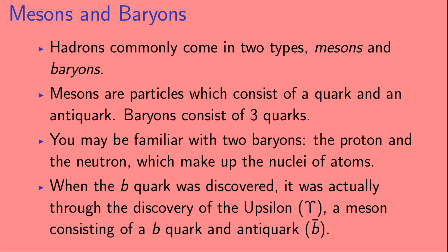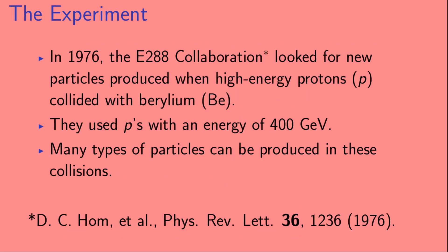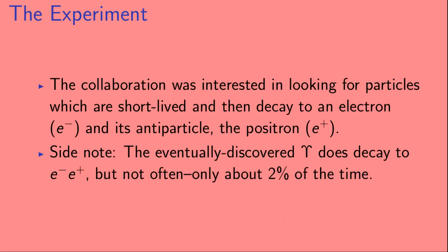When the B quark was discovered, it was actually through the discovery of the Upsilon — represented by the Greek character Upsilon — which is a meson consisting of a B quark and B anti-quark. In 1976, the E288 collaboration looked for new particles produced when high-energy protons collided with beryllium, using protons with an energy of 400 GeV. The collaboration was interested in particles which decay to an electron and its antiparticle, the positron. The eventually discovered Upsilon does in fact decay to an electron and a positron, but only about 2% of the time.